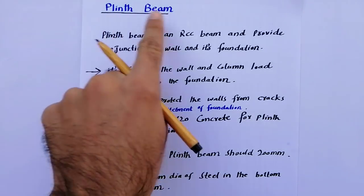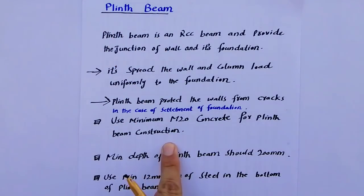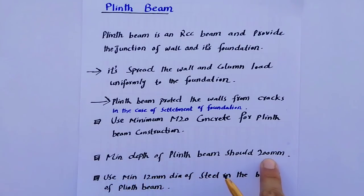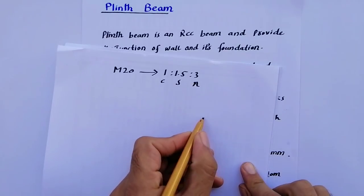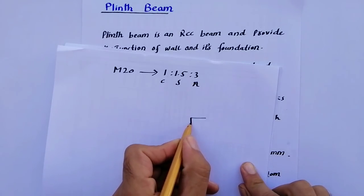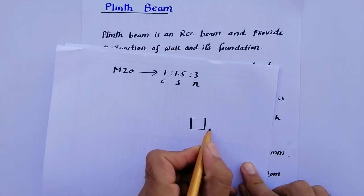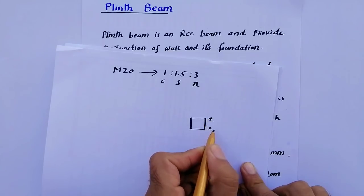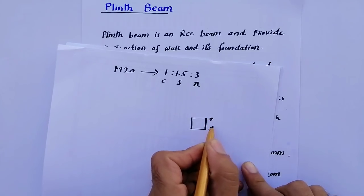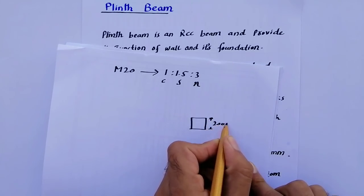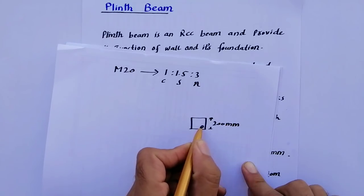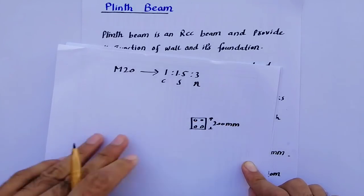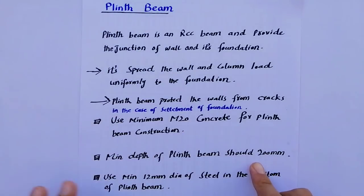The second point: the minimum depth of the plinth beam should be 200 millimeters. Looking at this plinth beam cross section, the minimum depth of plinth beam is 200 millimeters.